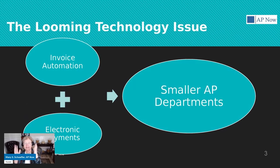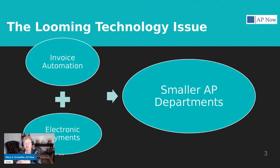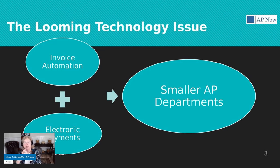I want to address what I call the looming technology issue here. Typically in the past — and by the past I mean 10 years or more ago — when we talked about separation of duties issues related to the accounts payable function, it was a small company issue. It was not something that mid-sized companies and large companies ever even thought about. However, we've had a lot of technology advances and a lot of technology coming into our accounts payable function. We've got a lot of invoice automation.